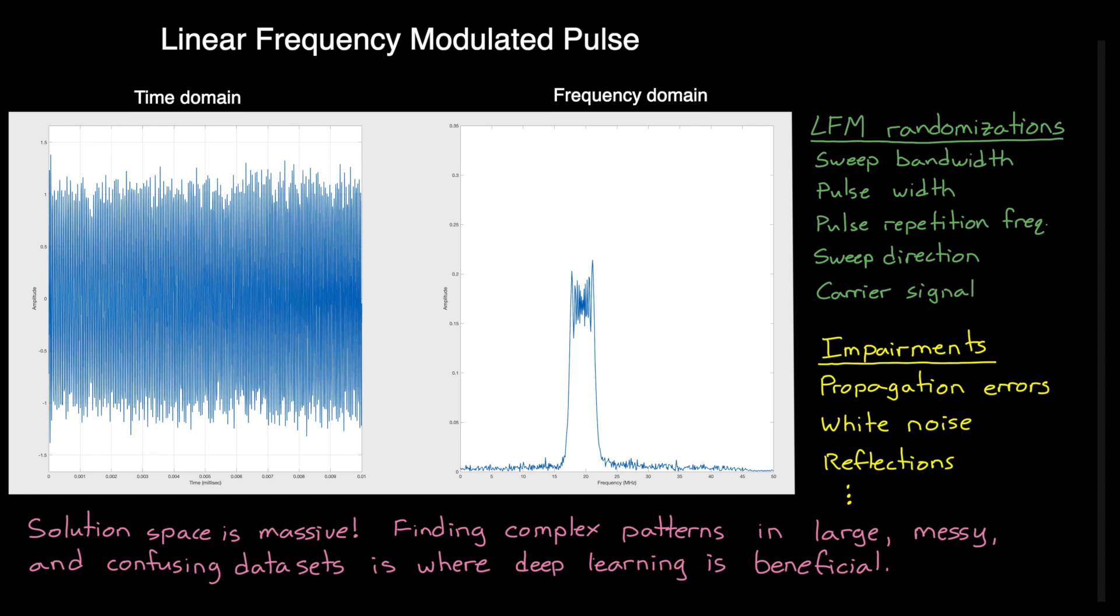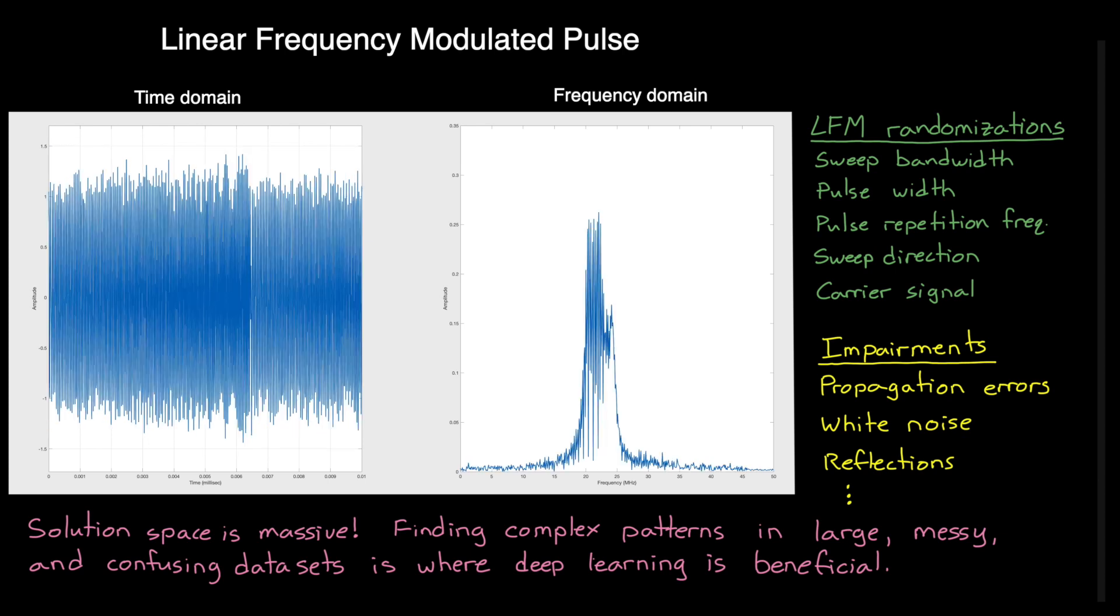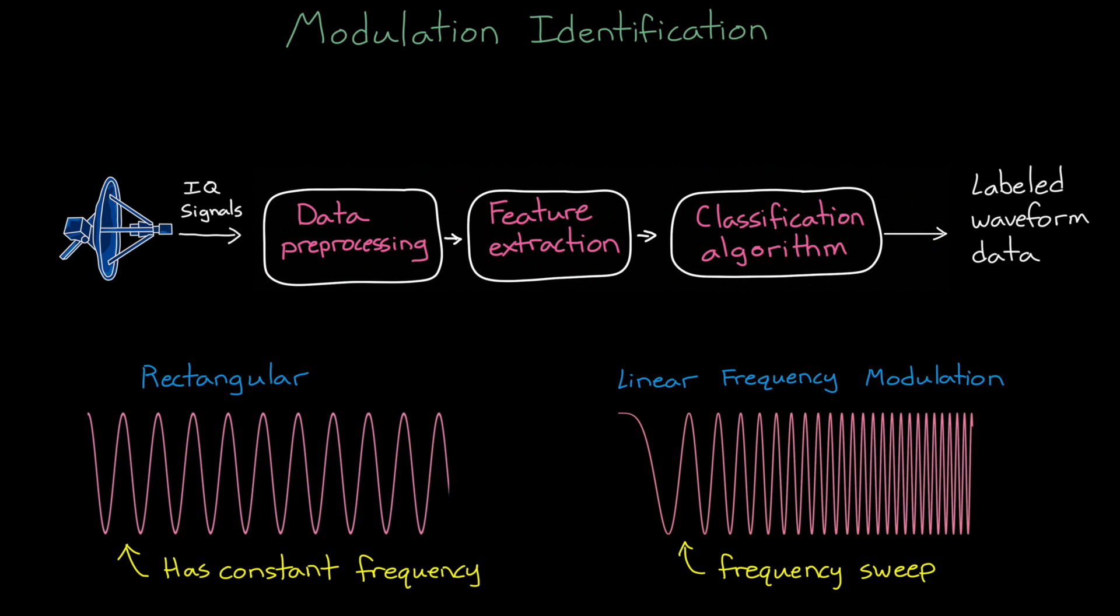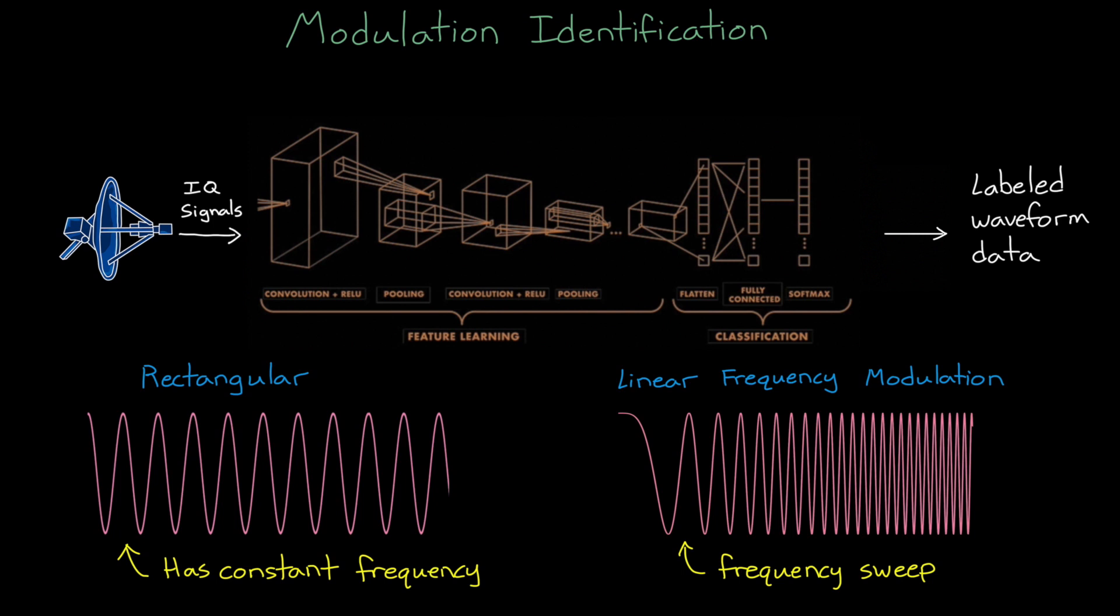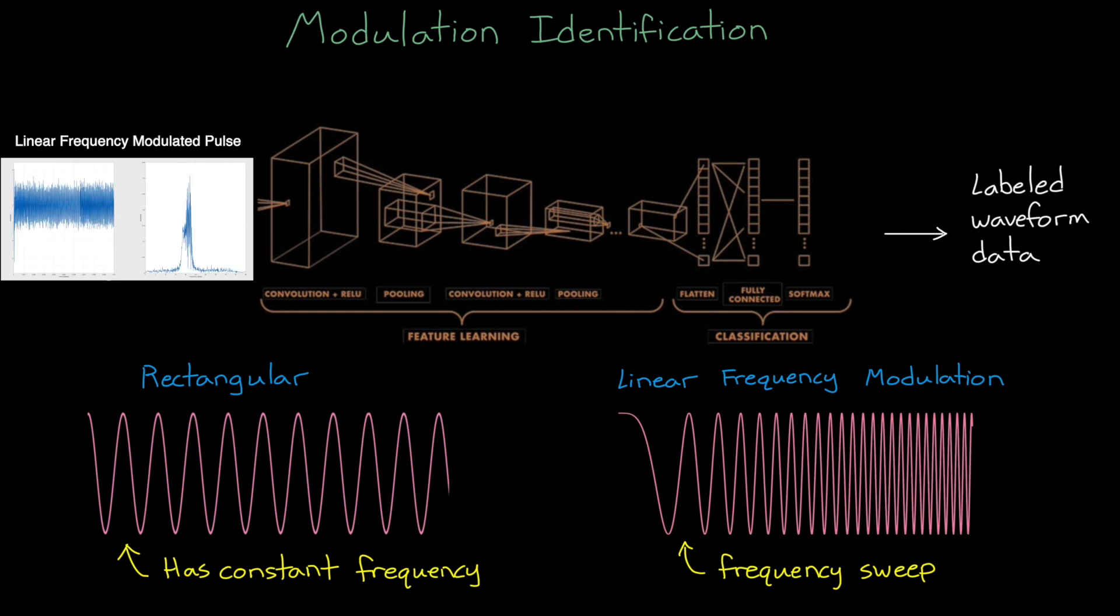But to accomplish this, you need access to training data. As an oversimplification of the deep learning problem, we could set up a network architecture that will accomplish all of the data processing, feature extraction, and waveform identification tasks. Then, if we have access to enough labeled data, we could employ a deep learning algorithm that will tune this network to accurately classify waveforms in unlabeled data. That's the goal.